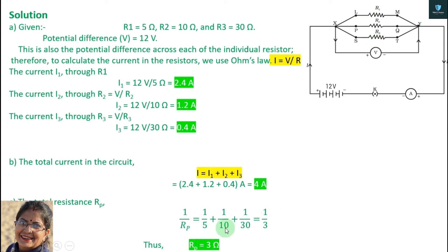Here is 5, here is 10, here is 30. Now we will solve it. We will solve it after the value of 1 by 3. The value of 1 by r3 is 1 by rp.